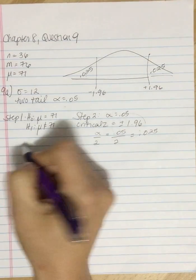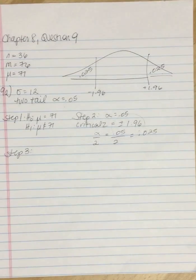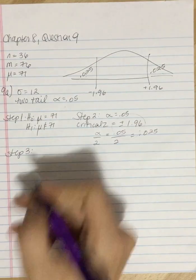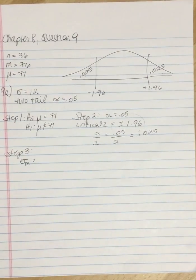So I've got step one, step two, step three of the hypothesis testing procedure. I need to calculate my z-score. So part one of that is I need to calculate the standard error.